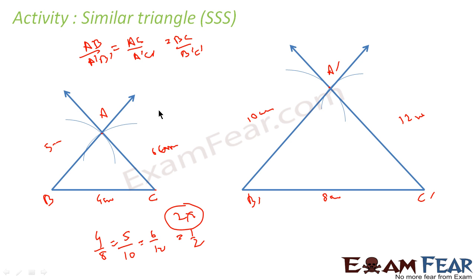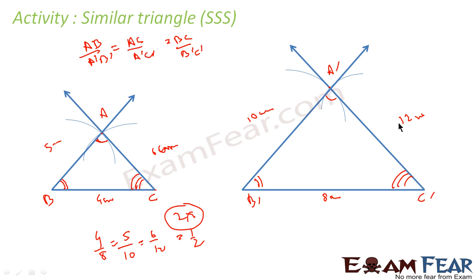Thus, these two triangles are similar. If you measure angle A, you will find that angle A equals angle A'. If you measure angle B, angle B equals angle B'. If you measure angle C, angle C equals angle C'. You can do this for any triangle — instead of 2x, you can take 3x, making sides 12, 15, 18. You can take any factor and you will always get corresponding angles equal.